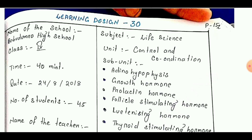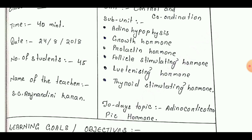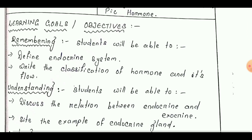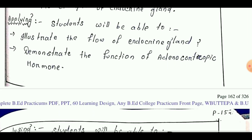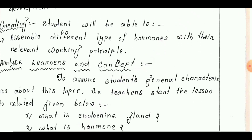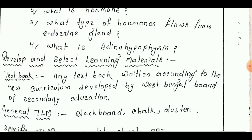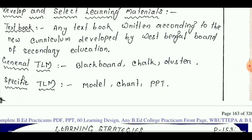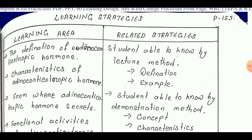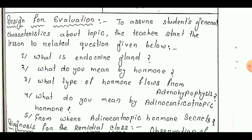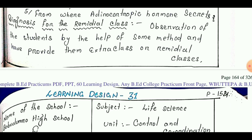We have reached our last learning design, number 30, taken from Class 9. Today's topic is 'Adrenocorticotropic Hormone.' Learning goals are: remembering, understanding, applying, analyzing, evaluating, and creating. Next is analyze learner and concept, then develop and select learning materials. Learning strategy is divided into two parts: learning area and related strategy. Next is design for evaluation, and diagnosis for remedial class.